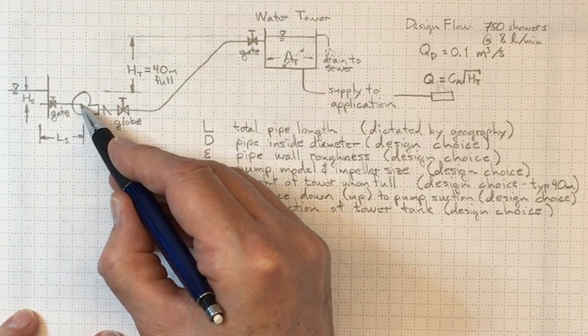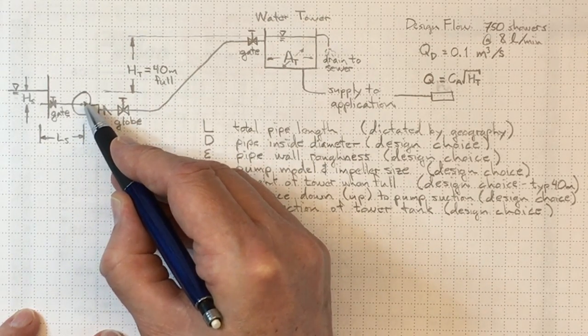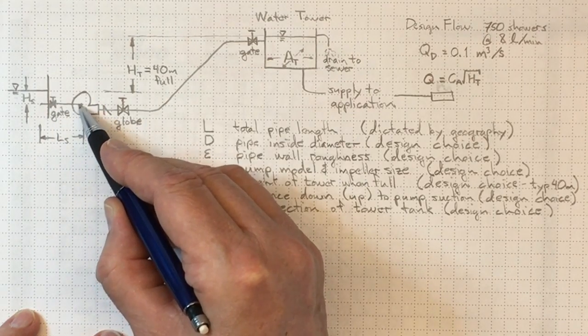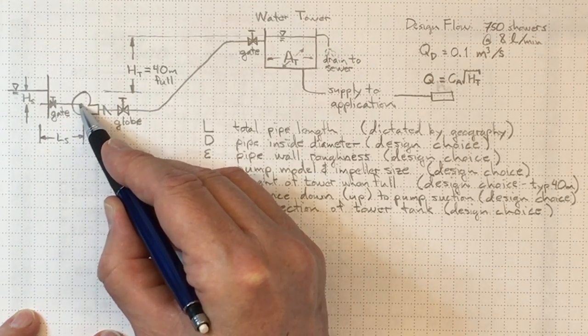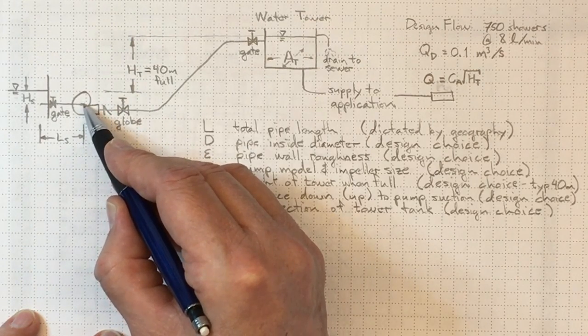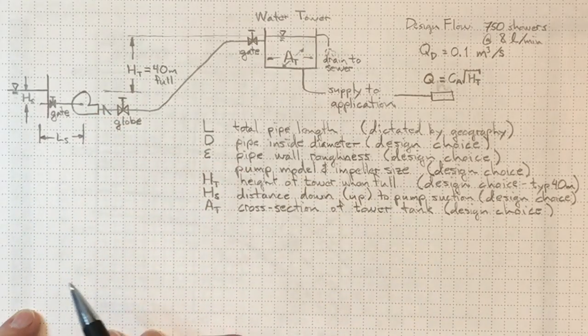So if we want to figure out the NPSH here and make sure we're not going to have a cavitation problem, then we're going to have to look at the difference between the NPSH that we have available, that is what the pressure actually is here, and the NPSH that the pump requires here, what the pressure must be in order to avoid cavitation.